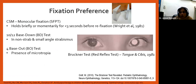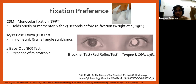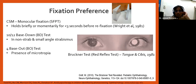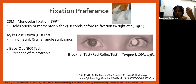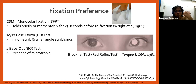The next set of tests relates to fixation preference. The Standard Fixation Preference Test (SFPT) — also known as central, steady, and maintained (CSM) — involves occluding one eye and assessing the amblyopic eye's ability to fixate. Show fine detailed or accommodative targets close to the child's visual acuity level, or use colorful lights and toys to attract attention. If the child holds fixation for greater than five seconds, this indicates normal fixation or potentially normal visual acuity.